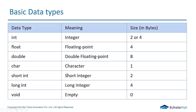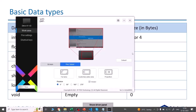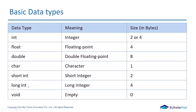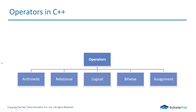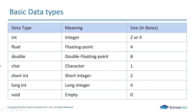Similarly, character, short integer, long integer, and void are there. Short integer means it's going to hold smaller values where the number is not going to be that large, and long integer is for larger numbers. Void does not take any data type and does not take any size. We're going to see these things in the compiler, so let's jump to VS Code.